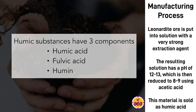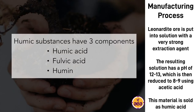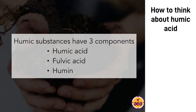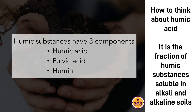The liquid humic acid is either sold as a liquid or sometimes dried to form a dry water-soluble powder. The liquid usually contains an appreciable potassium content — a few percentage points — as a result of the potassium hydroxide extraction agent used. The way to think about these humic acid liquids and dry water-soluble powders is that they are the fraction that can be extracted with an alkali — they are soluble in alkali and can also be soluble in alkaline soils.